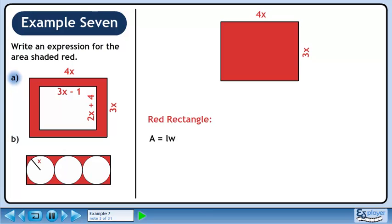The formula for the area of a rectangle is A equals length times width. The length is 4x and the width is 3x, so plug these in for L and W. The full area of the red rectangle is 12x².